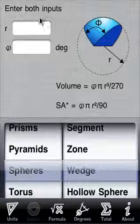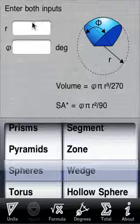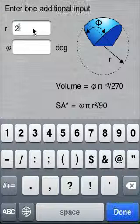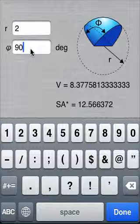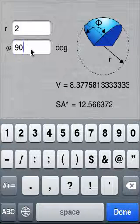As seen by the instructions along the top, we must enter both inputs. We will enter a radius of 2 and an angle of 90 degrees. Notice that the calculation was performed as soon as we entered the required number of inputs.